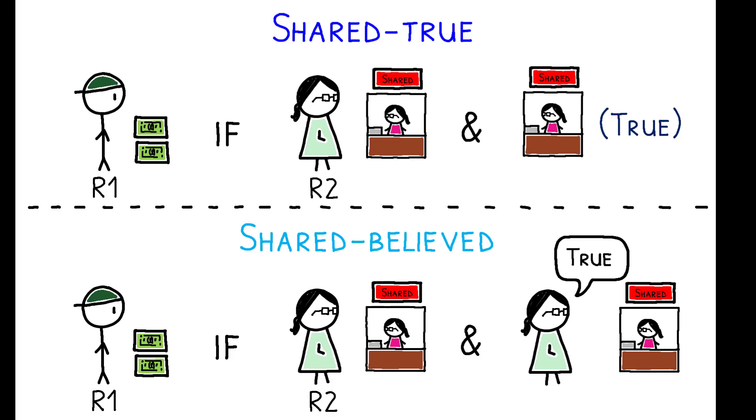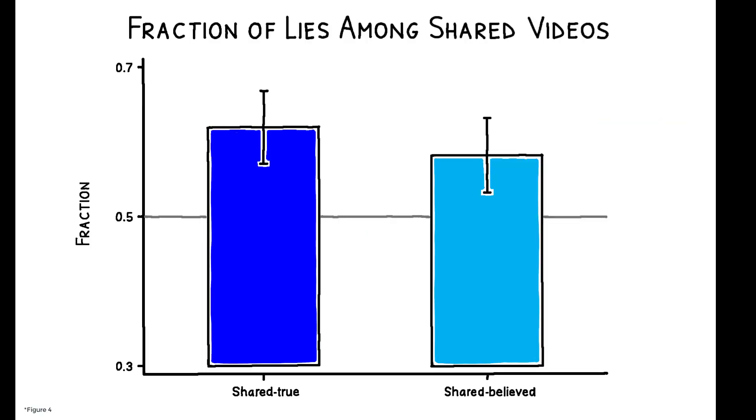In both cases, R2 was fully informed of R1's incentive structure. And the results show that lies were shared more often than truthful videos.